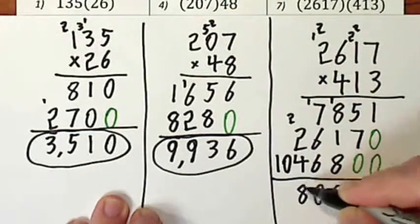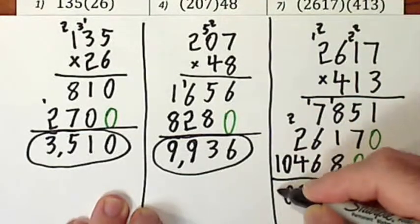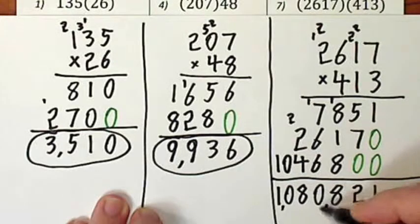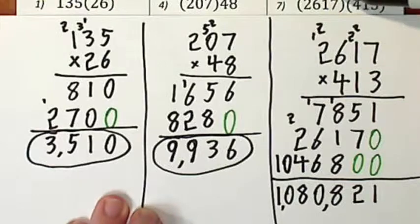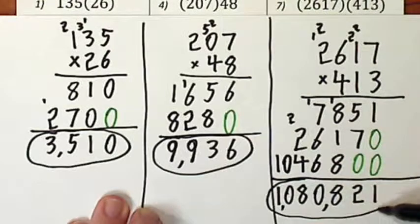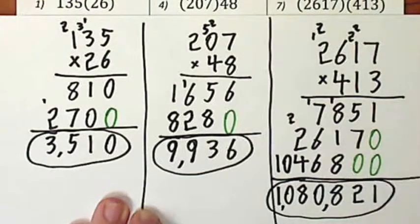So the product of two thousand six hundred seventeen and four hundred thirteen is one million eighty thousand eight hundred twenty-one.